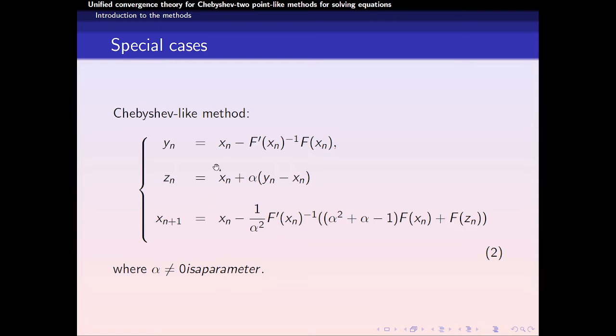This is the first case, Chebyshev's-like method and we can observe that the first step is Newton's method and α is not equal to 0 is a parameter.